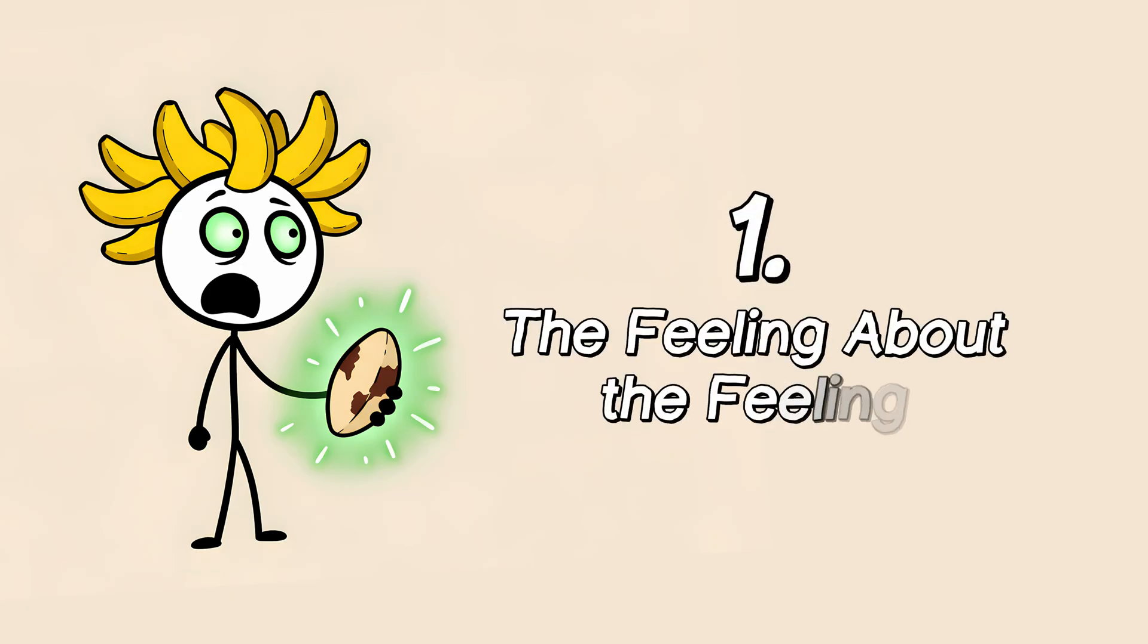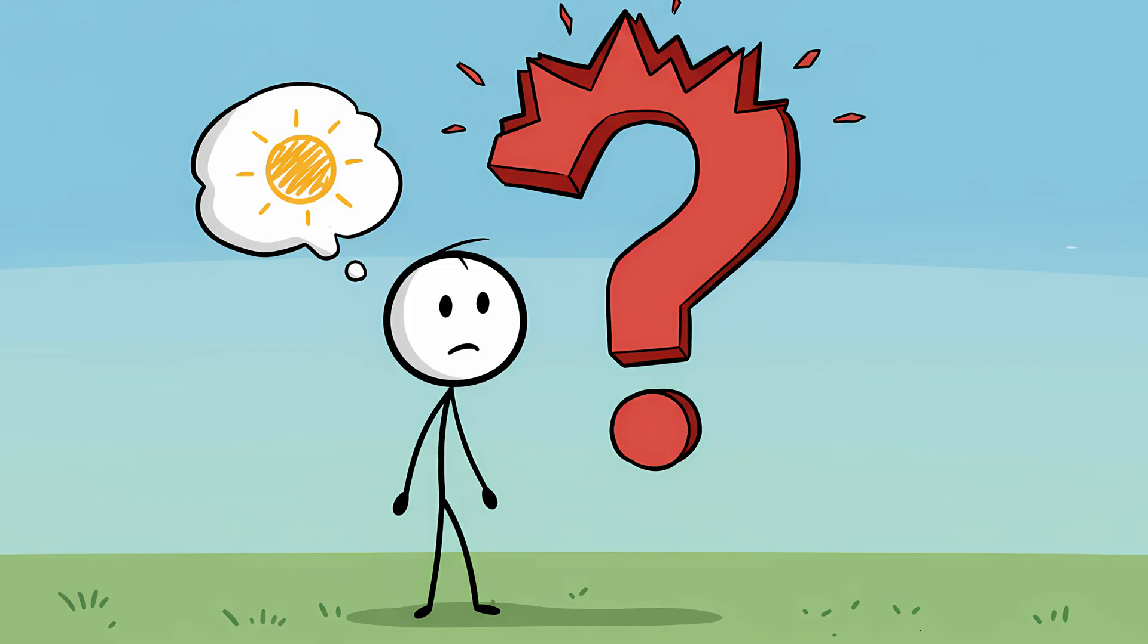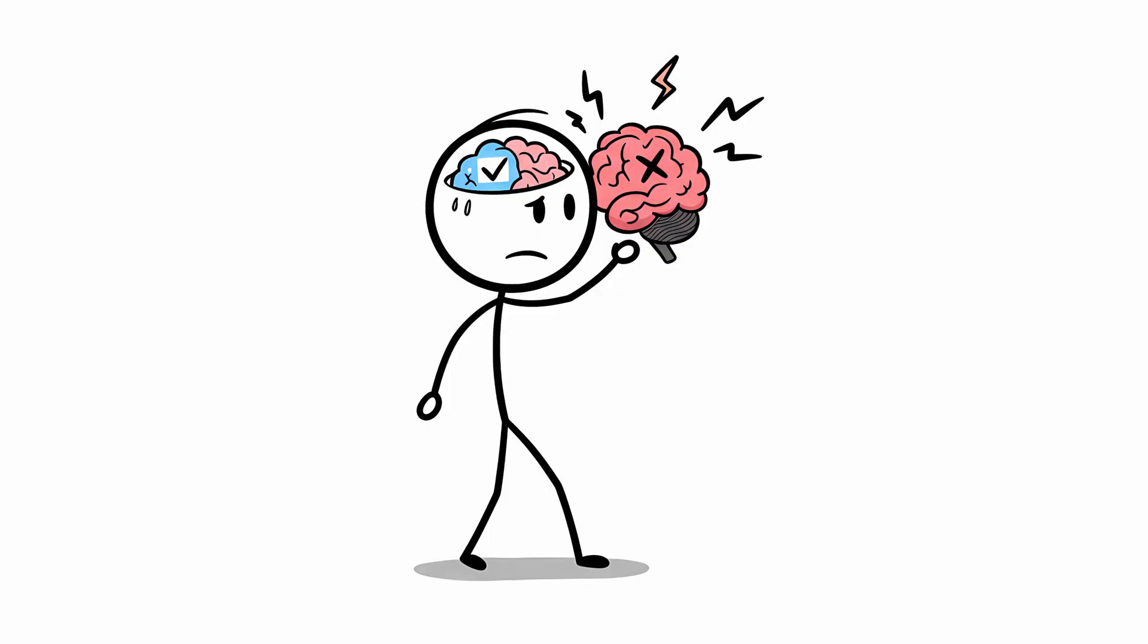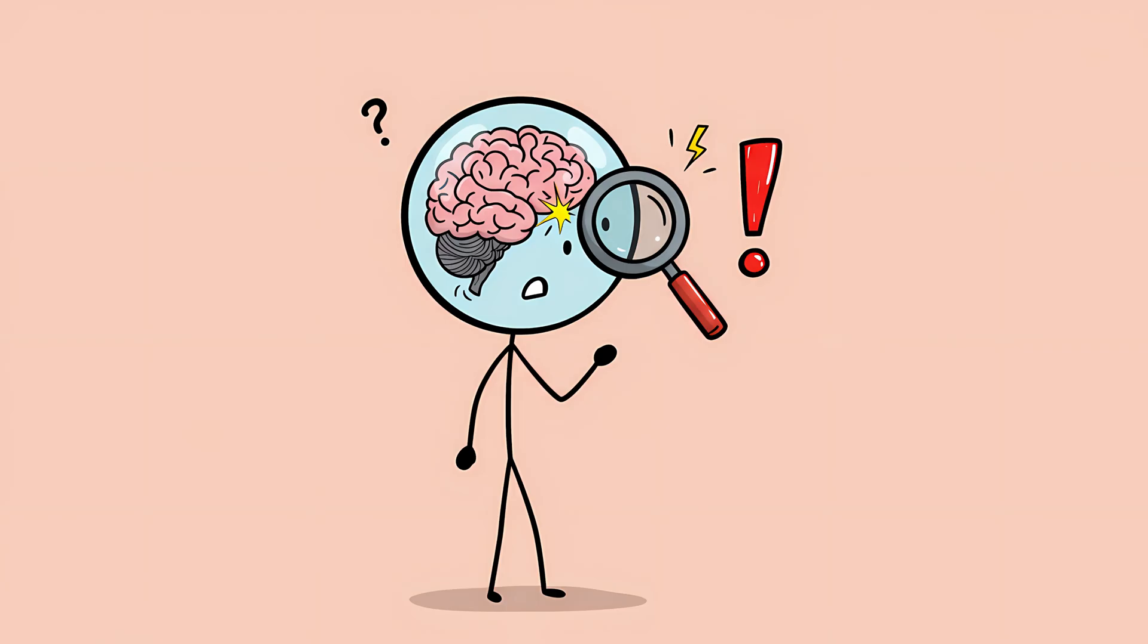Number one, the feeling about the feeling. Perhaps the strangest part of déjà vu isn't the sensation of reliving a moment. It's the secondary sensation that happens right after. The crystal clear awareness that the feeling is wrong. This is what scientists call a conflict in cognition. You're simultaneously experiencing a powerful feeling of a memory being recalled, and the powerful knowledge that you're creating a memory for the first time. Your brain isn't just making a mistake, it's making a mistake, and immediately running a diagnostic check that flags the mistake in real time.